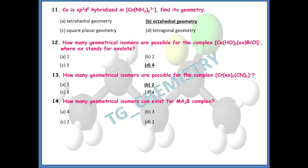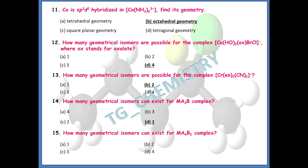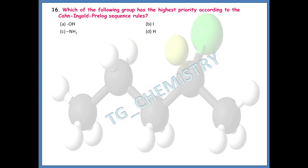How many geometrical isomers can exist for an MA3B type complex? You have to be careful because different isomers are possible, but in terms of geometrical isomers only one kind exists — option D. For MA4B2 type complexes, the number of geometrical isomers is two — option B.